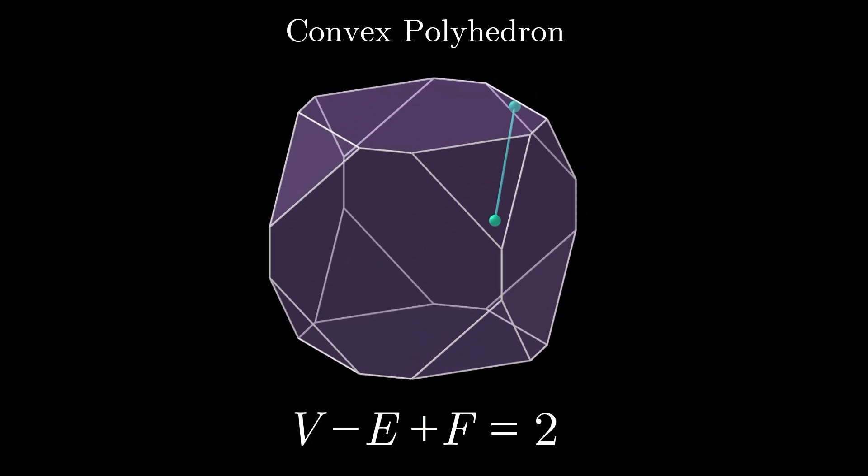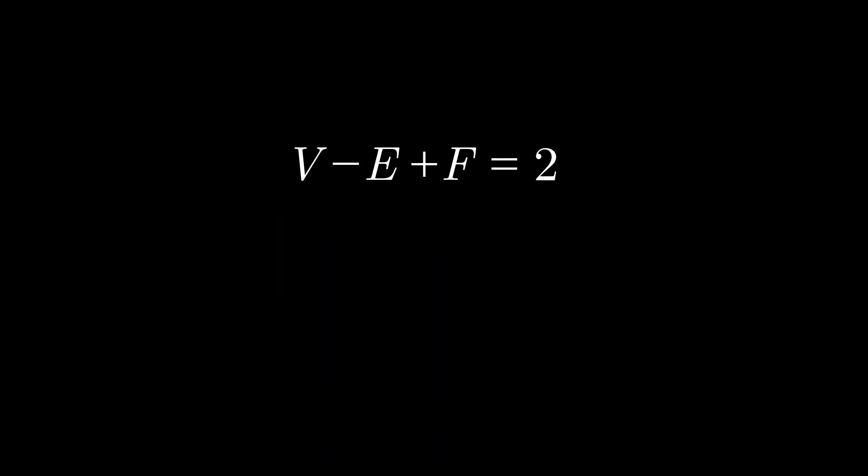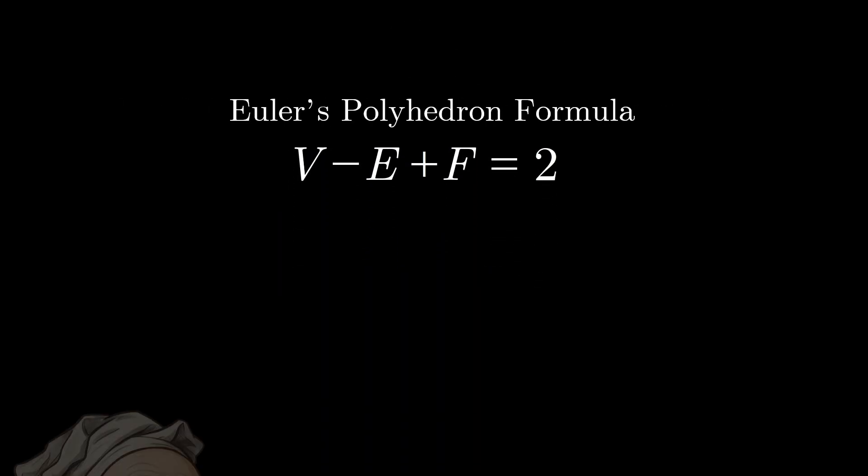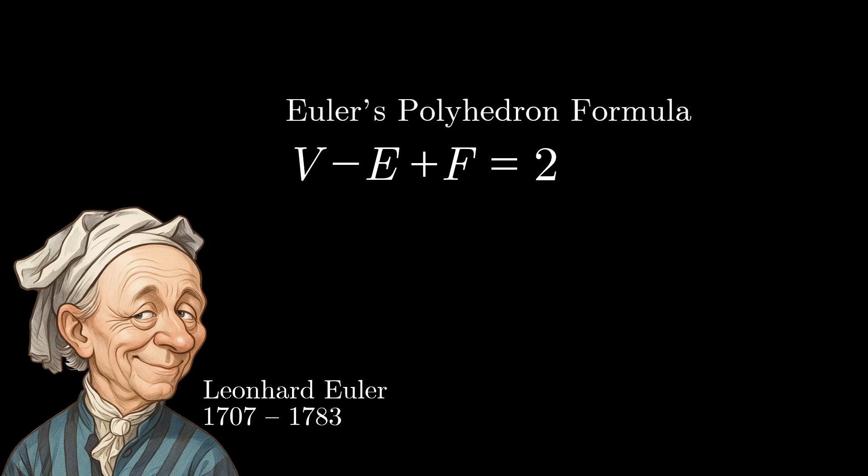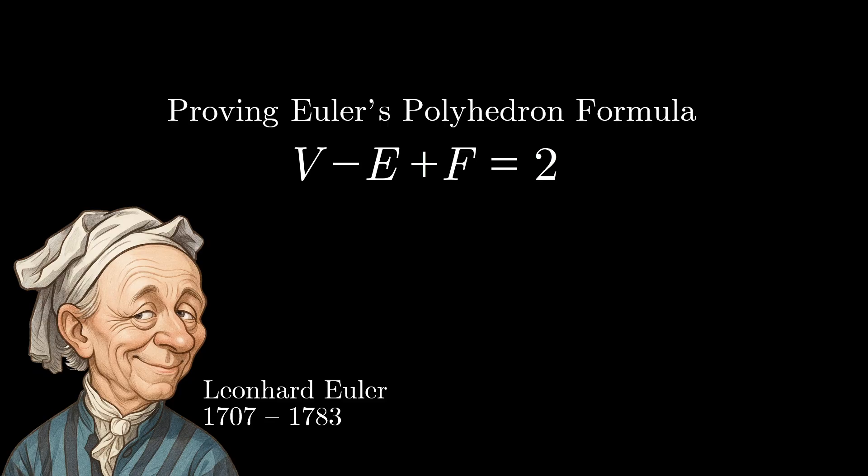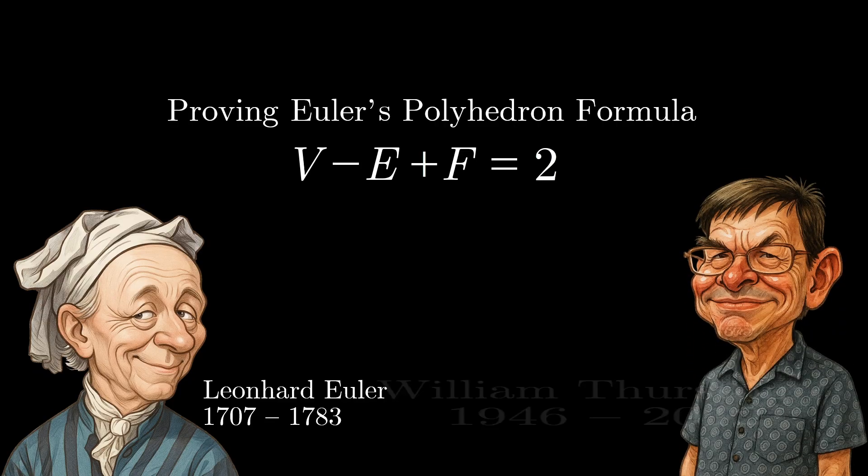V - E + F = 2 is called Euler's polyhedron formula, named after Leonhard Euler who first published the result in the mid-18th century and was shocked that no one had noticed it earlier. There currently exist at least 20 different proofs of Euler's polyhedron formula. In this video, we'll take a look at a remarkably attractive and accessible proof from the mathematician William Thurston.